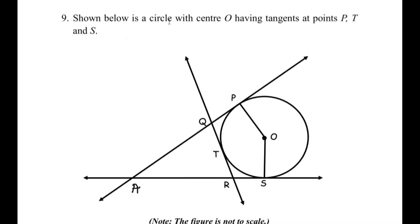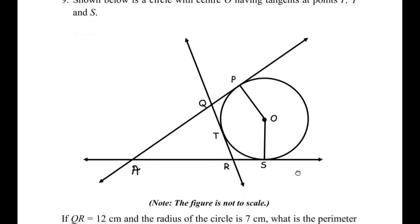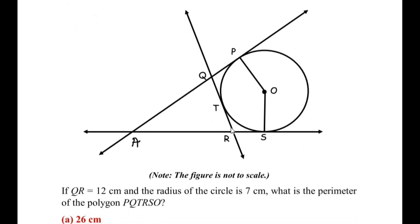Shown below is a circle with center O having tangents at points P, T, and S. QR is given as 12 centimeters and the radius of the circle is given as 7 centimeters. We need to find the perimeter of the polygon P, Q, T, R, S, and O.